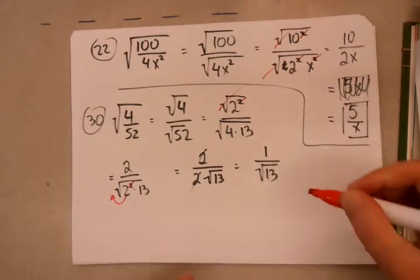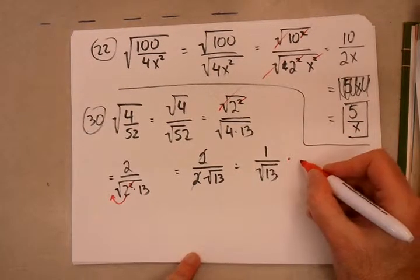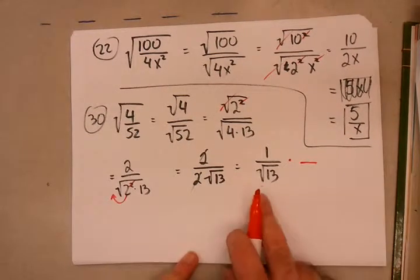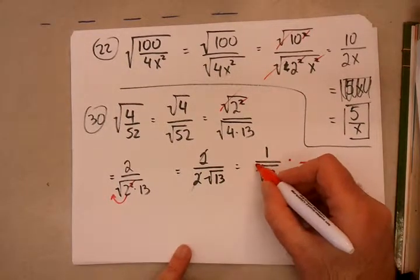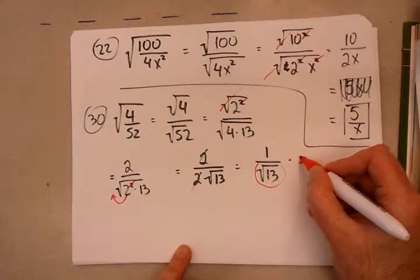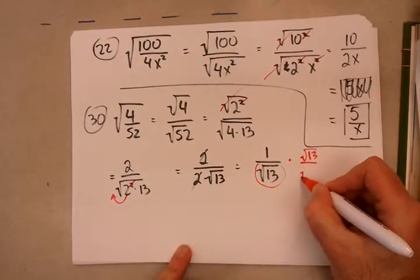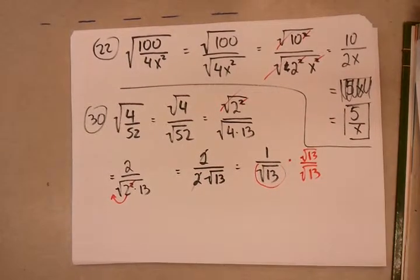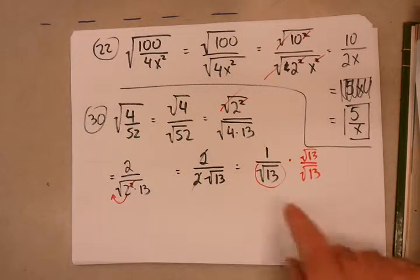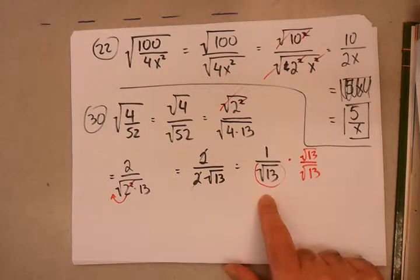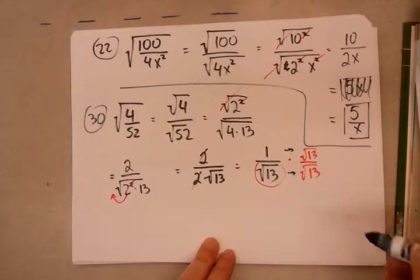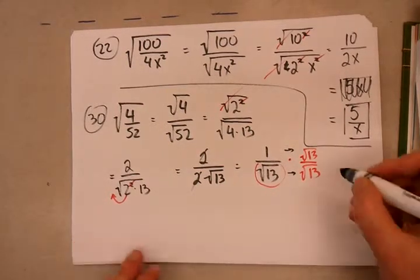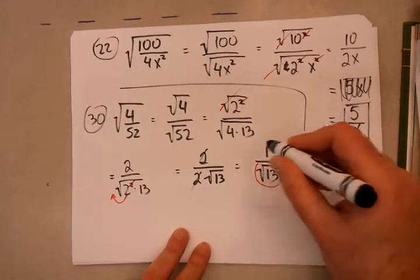You're going to multiply this by a fraction composed entirely of the root that you're trying to get rid of. So, it's entirely composed of this. So, it's going to be root 13 over root 13. Same thing in the numerator and the denominator, which in total ends up as a 1. So, you're essentially multiplying this fraction by a 1, which doesn't change anything. But, it allows us to do this. Once you cross multiply, you're going to get 1 times the root 13.